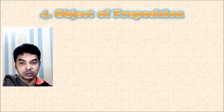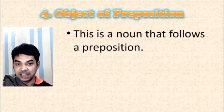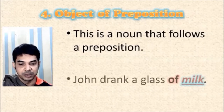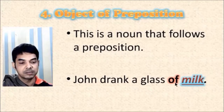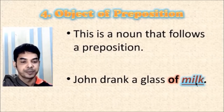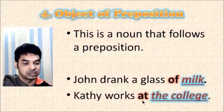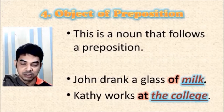Here comes the fourth rule: object of a preposition. A noun follows a preposition and is used as its object. For example, 'a glass of milk' — 'of' is the preposition and 'milk' is the noun used after it, making 'milk' the object of a preposition. Here's another example: 'Kathy walks at the college.' 'At' is the preposition, followed by the noun 'the college.' So 'the college' is the object of a preposition. This is our fourth rule.